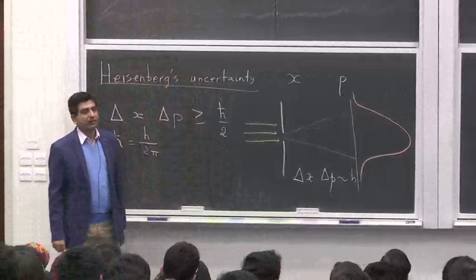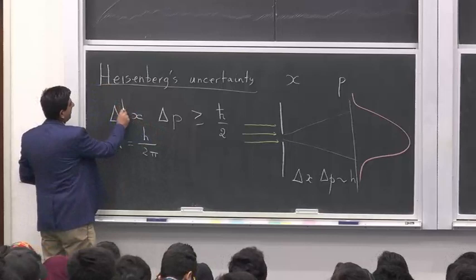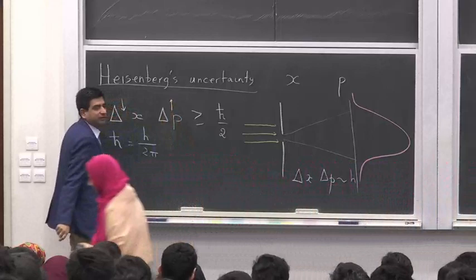There is a minimum threshold. It's not possible to decrease both Δx and Δp simultaneously. If you try to decrease Δx, Δp goes up. If you try to decrease Δp — if you try to make momentum more certain — then Δx goes up.